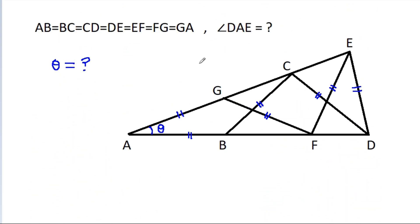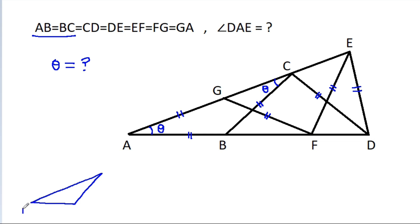Here we have AB is equal to BC. So this angle will also be theta. And now in triangle ABC, this angle is theta and this angle is theta, so this exterior angle will be theta plus theta, that is 2 theta.